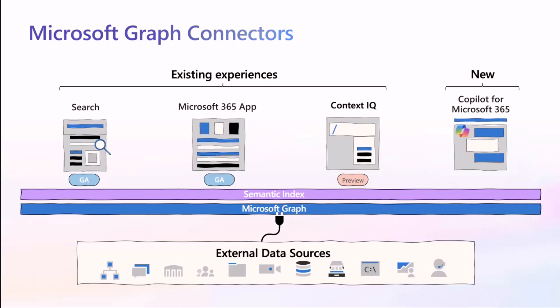Pre-co-pilot or pre-LLMs, this was using largely what's known as a lexical kind of query — you had to know the title or something about it that could be picked up from metadata, the file name, or the title, because that was the only way to search. The benefit of using LLMs — large language models — is that you can now use cosine similarity and nearest neighbors. You now have a semantic index that reasons over this data and puts it in context so you can get more relevant information. On existing experiences, if you go to portal.office.com, the Microsoft 365 app, search inside SharePoint, or even Context IQ in preview, you're already able to use Graph Connectors.